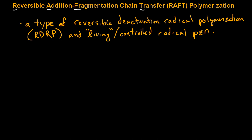RAFT is a type of reversible deactivation radical polymerization, or also considered a living-controlled radical polymerization.